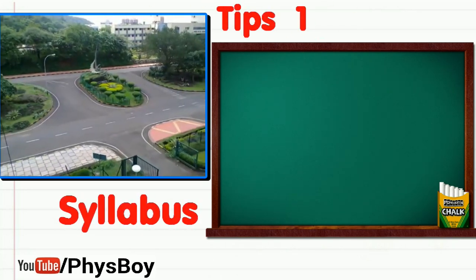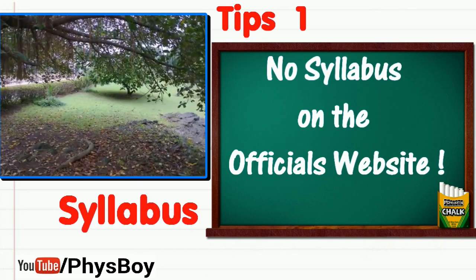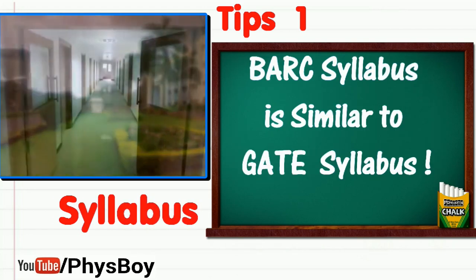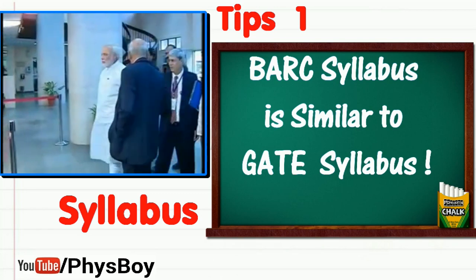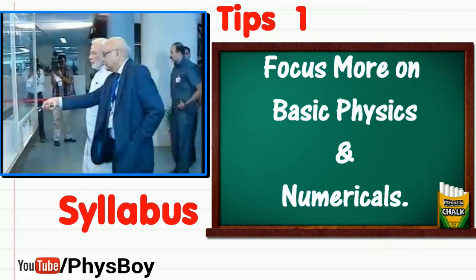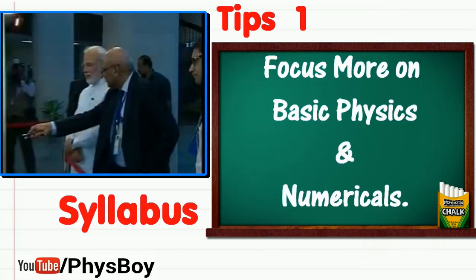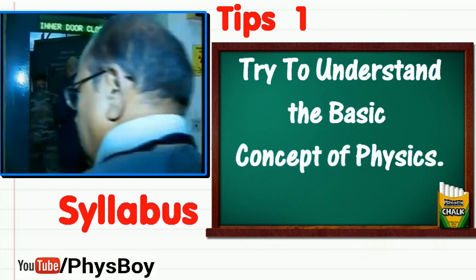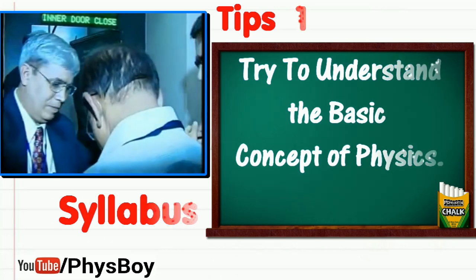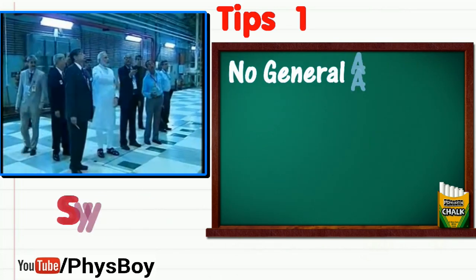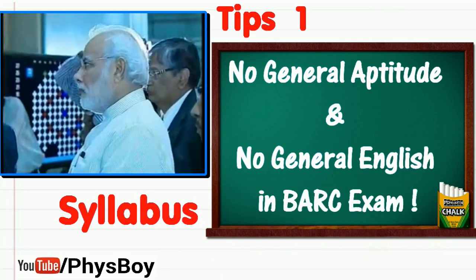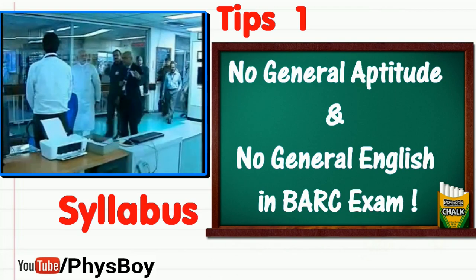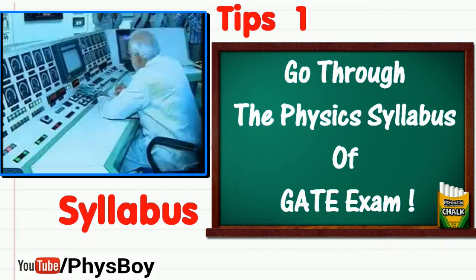Tip number one: the syllabus. There is no official syllabus for the BARC examination on their website. The syllabus of the BARC online test is similar to that of GATE in physics. They mostly ask basics, but since BARC is one of the best research institutes in the country they do give some importance to tough questions. If your concepts are clear, there is no need to worry. There are no aptitude or English questions in the BARC exam, so if you are preparing for GATE that should be more than enough.